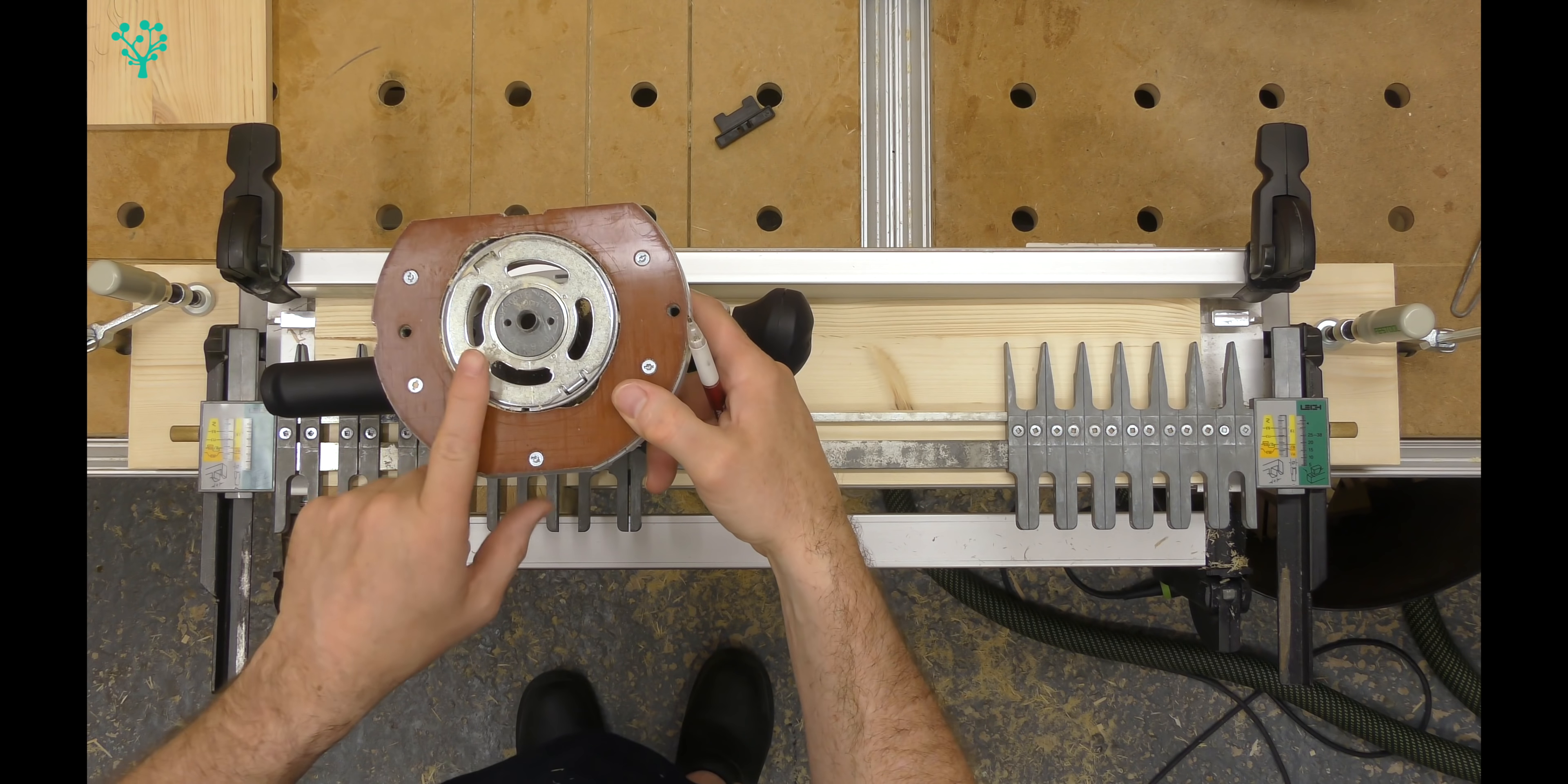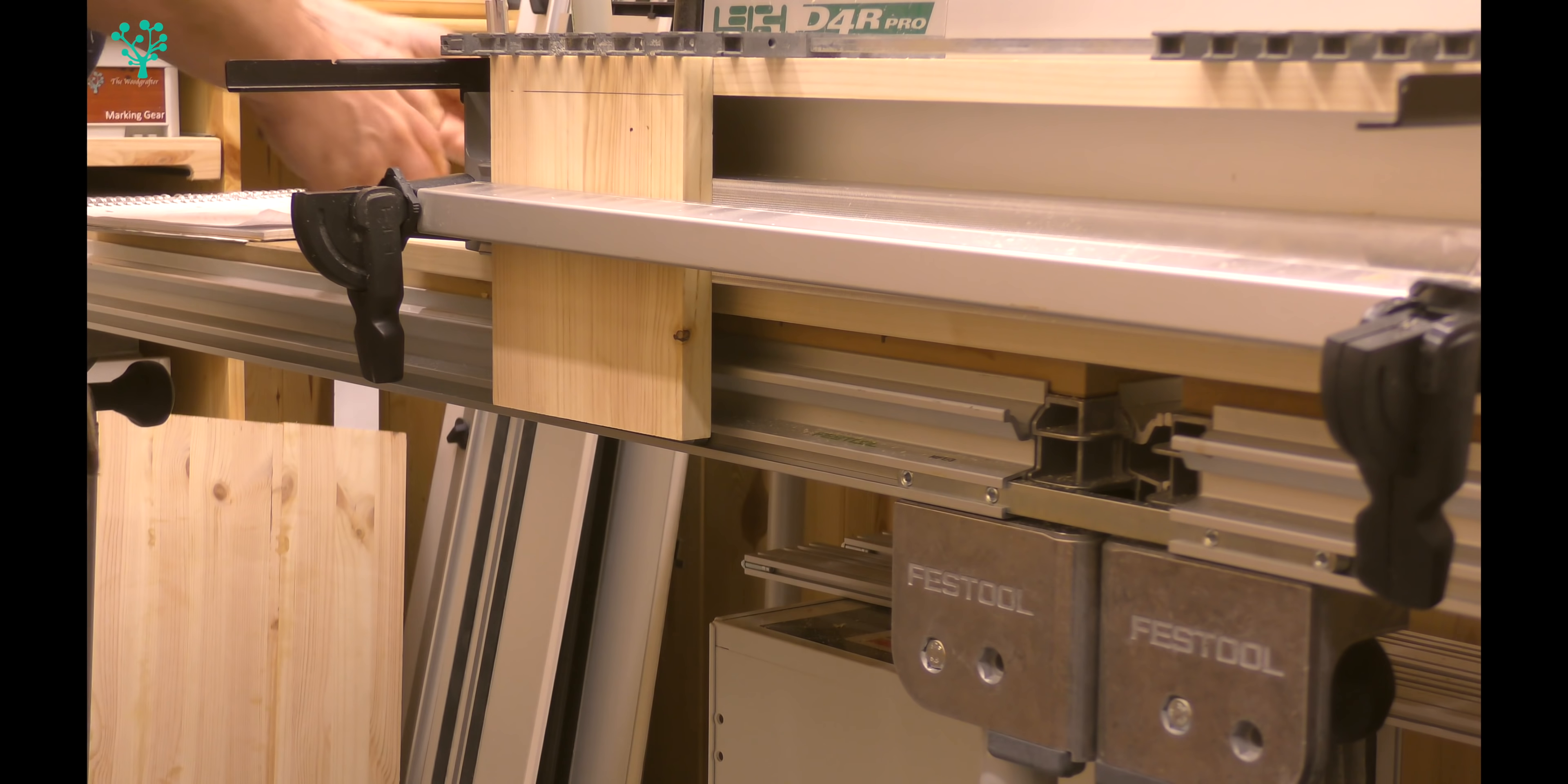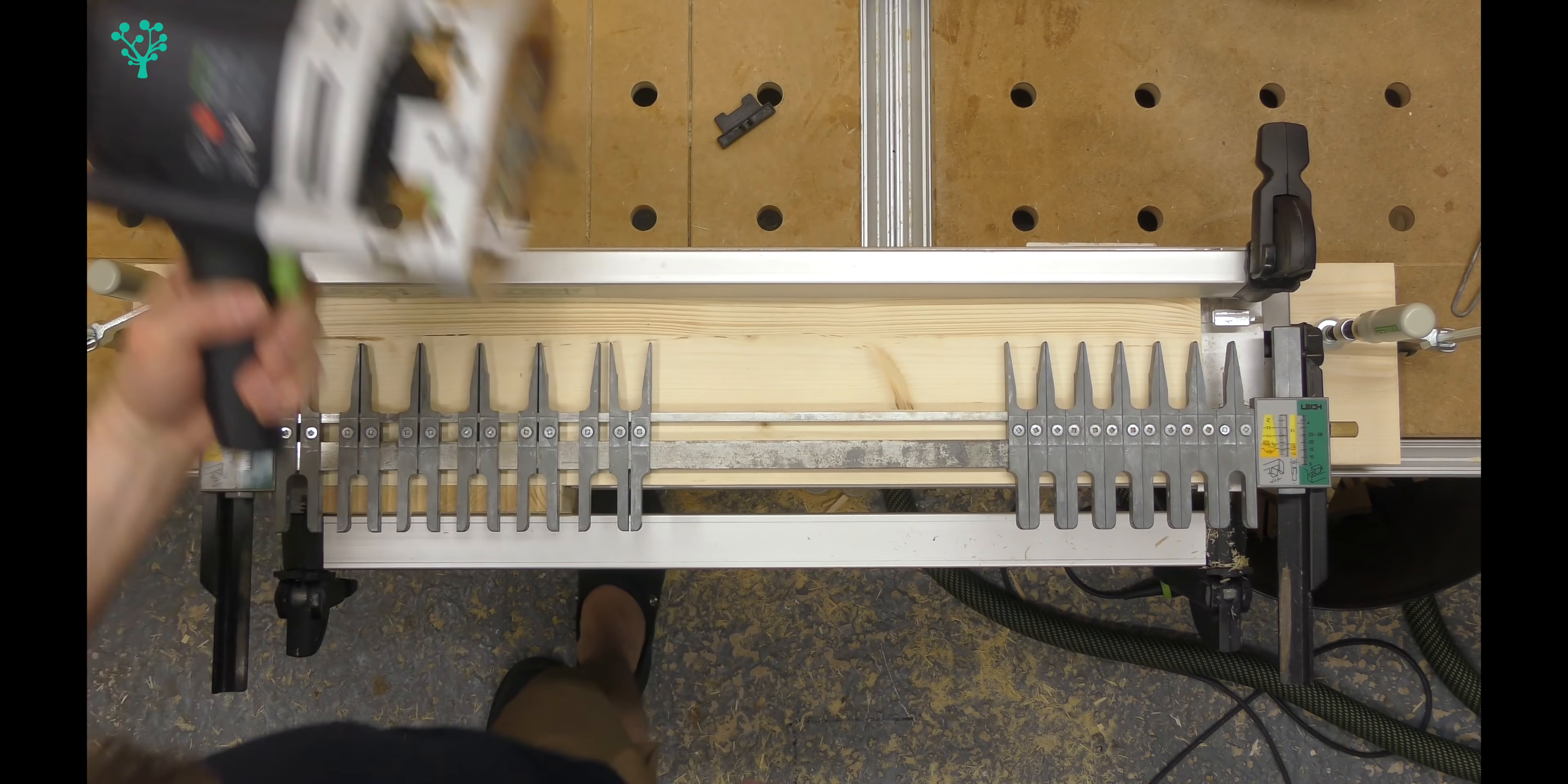The next thing we need to do is set the depth of cut of this router bit. To do that, you take a piece of stock the same distance and you just draw a line underneath like so. Now you just plunge down the router and you're looking for the bit just to cut that line ever so slightly, which is going to be about there, and then lock it in. That is now set for the appropriate depth.